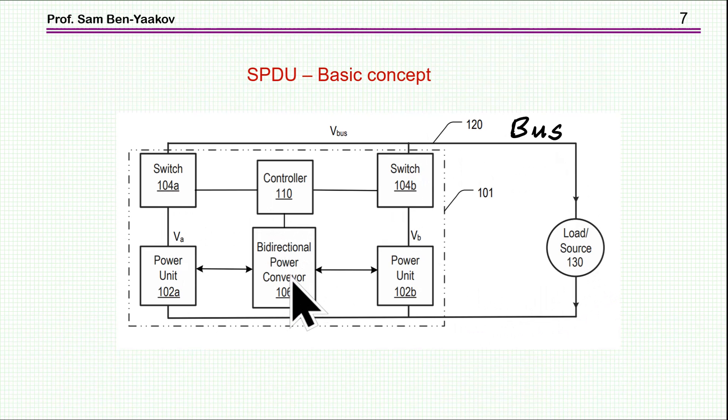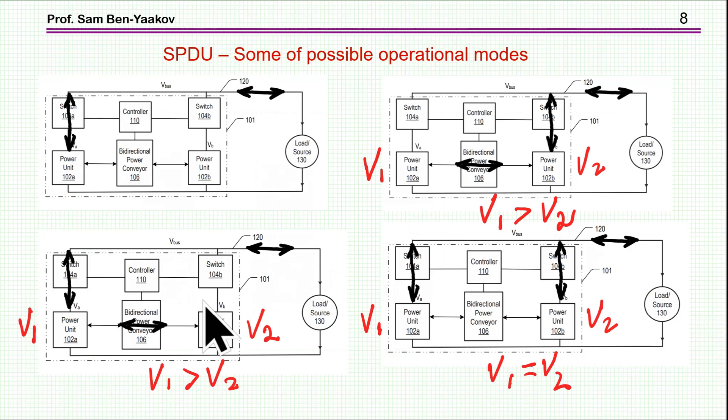And then we have switches here to the bus. This is the bus going to the source, could be the inverter, could be a charger. And then we have a controller controlling the bi-directional power converter between these two batteries.